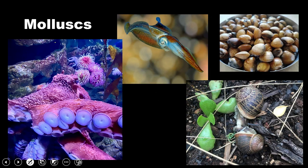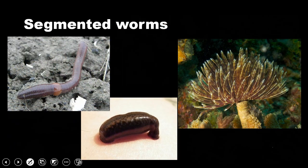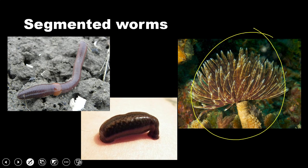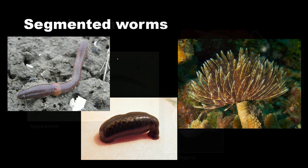Mollusks, mostly sea dwellers. Again, from octopus to clams. We have a few, like the land snails here, that live on land, but most of them in the water. Other segmented worms, there are a few interesting examples of sea dwellers. You might be familiar with leeches and certainly regular earthworms. Again, not a huge impact on human life.